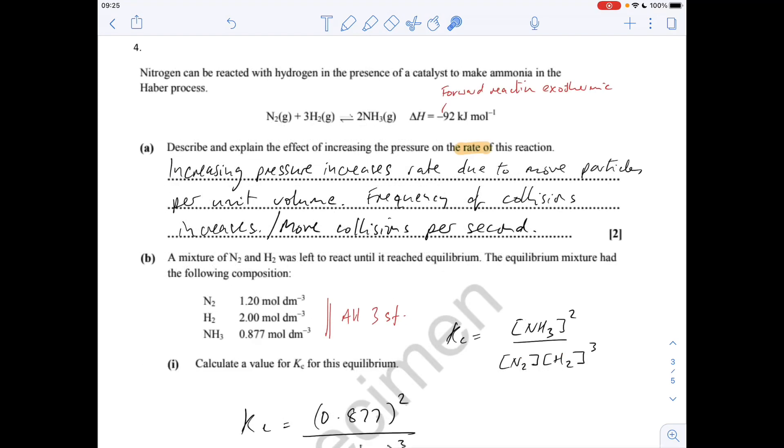The next question is about the Haber process equilibrium. The first question is actually asking about the rate of the reaction. The increase in pressure will increase the rate due to more particles per unit volume, because you're physically pushing them closer together. Therefore, the frequency of collisions increases, or you could say there's more collisions per second.